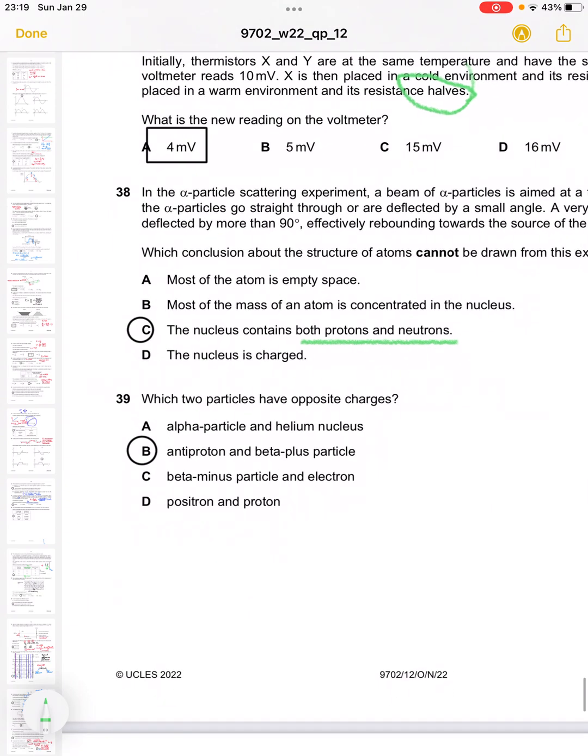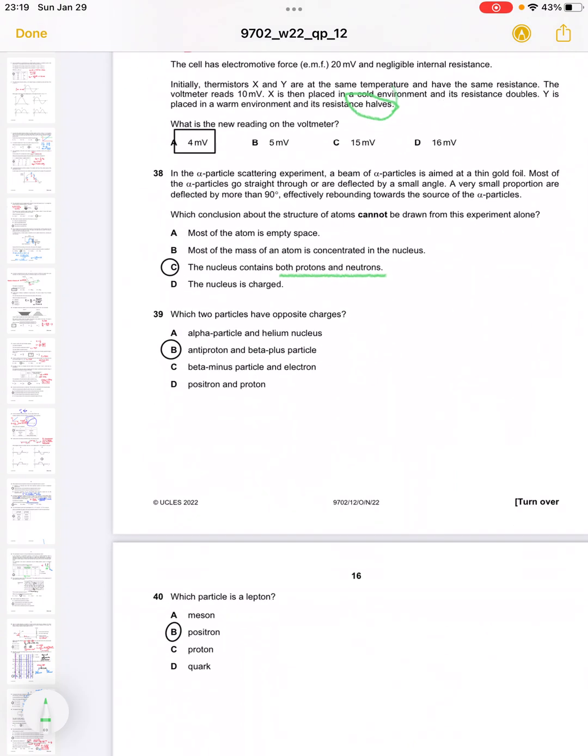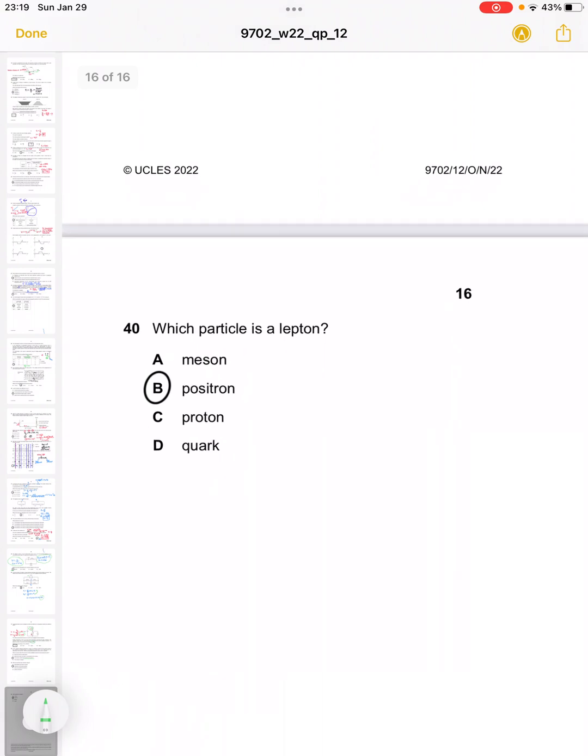Question 39 asks which two particles have opposite charge. B is the anti-proton and beta plus particle. Question 40 asks which particle is a lepton. The answer is positron - they all are fundamental particles.